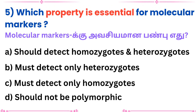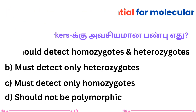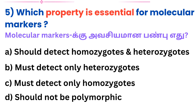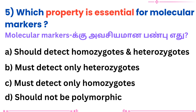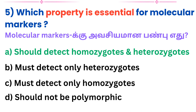Question 5: Which property is essential for molecular markers? Answer: Should detect homozygotes and heterozygotes.